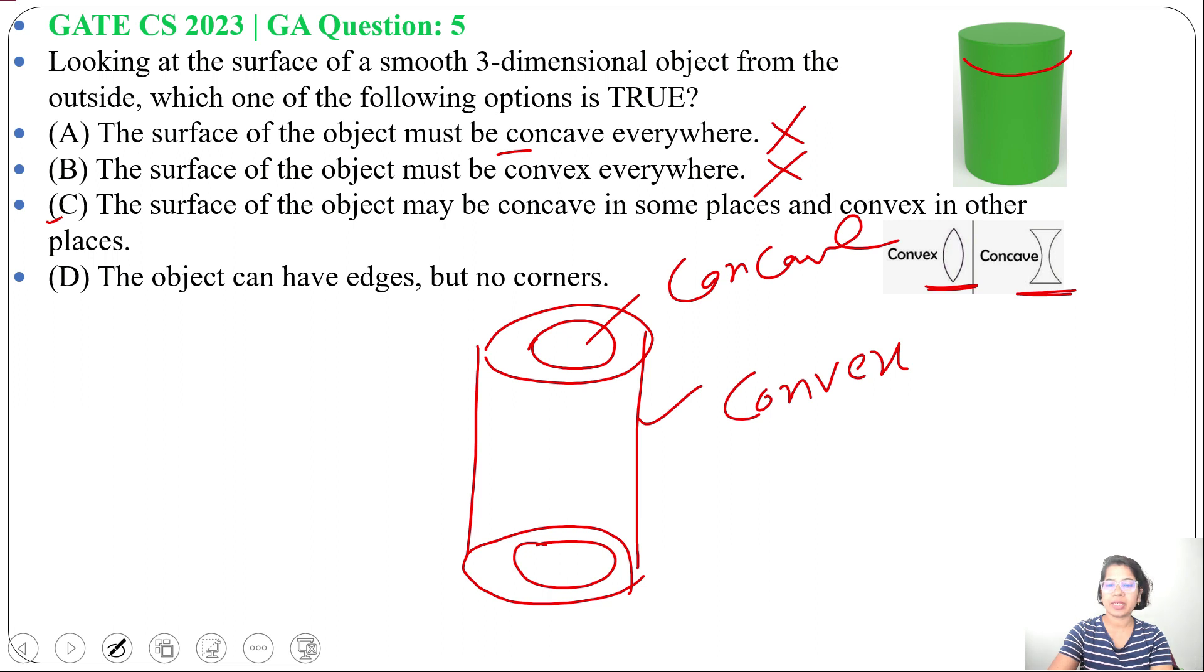Option C: the surface of the object may be concave in some places and convex in other places. This is true. It may be a combination of both, concave in some places and convex in some places.